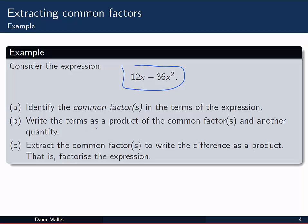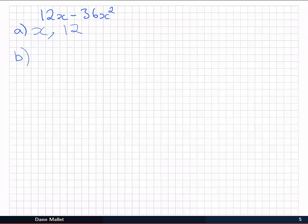Part B asks that we write the terms, 12x and 36x squared, as a product of the common factors and some other quantity. So this is just sort of writing out what 12x is in terms of these factors. And then 36x squared in terms of these factors. So 12x is easy, it is just 12 times x.